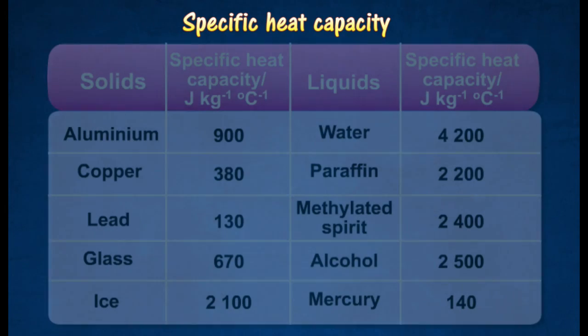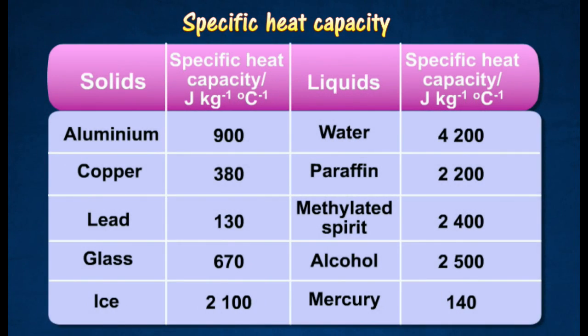The table shows the specific heat capacity of various substances. Substances with high specific heat capacities can contain a lot of heat energy, and so it takes a long time to heat them up and also a long time for them to cool down. Note that water has an unusually high specific heat capacity and thus serves as a very good cooling agent.